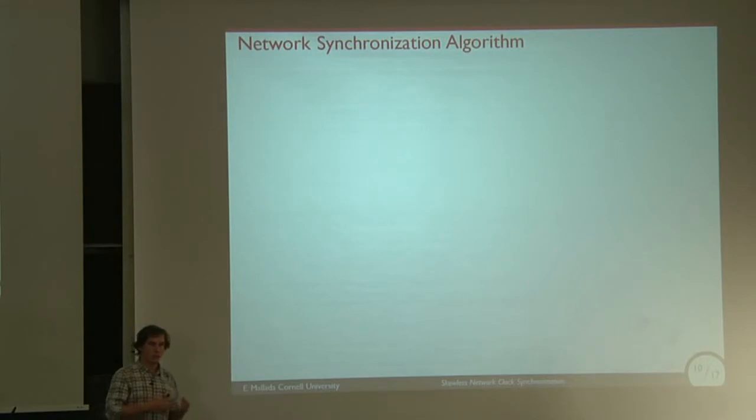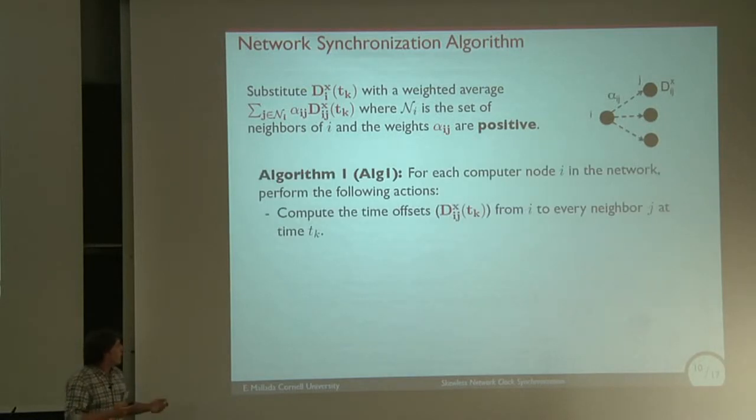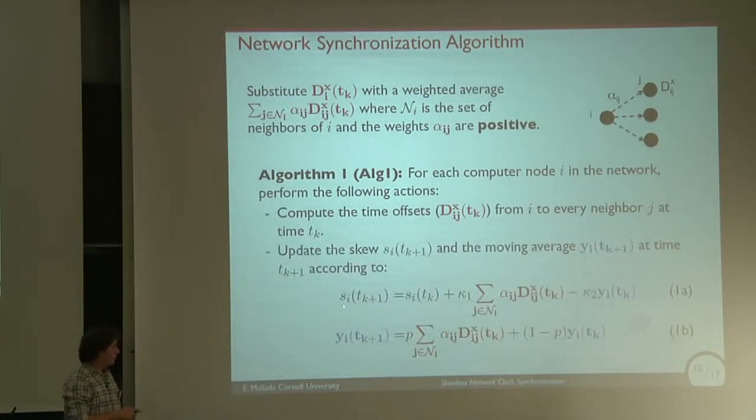We are interested in having this protocol not in one-to-one configuration, but rather in a network. We extend this protocol to a network by whenever you have offset measurements, you have a weighted average of your neighbors. The algorithm works as follows: at every iteration, you make measurements of each of your neighbors, offset measurements, and then you update both the skew and this estimation where we substituted this offset measurement by the weighted average of all the offsets of your neighbors.